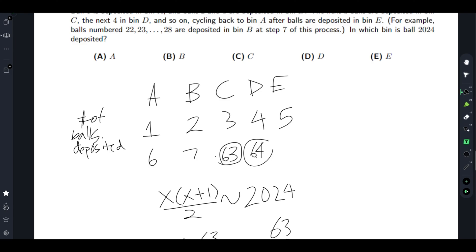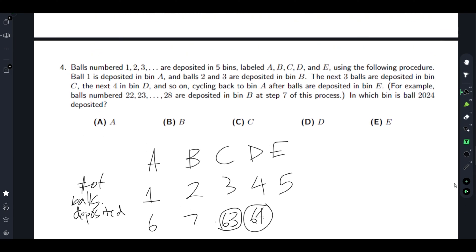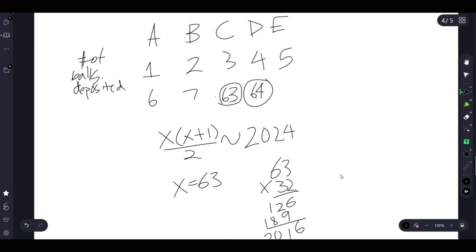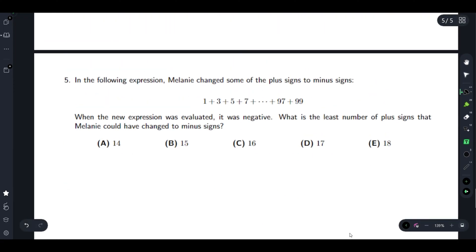Lastly, problem five: In which following expression, Melanie changed some of the plus signs to minus signs. When the new expression was evaluated it was negative. What is the least possible number of plus signs that Melanie could have changed to minus signs? So let's try it.